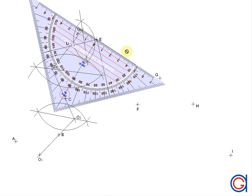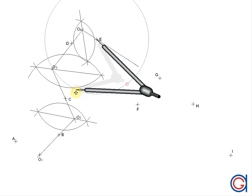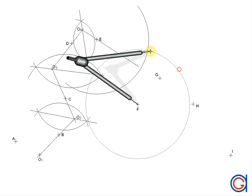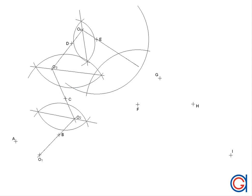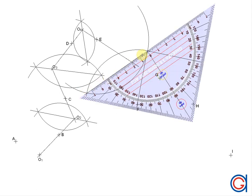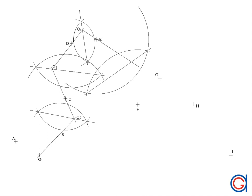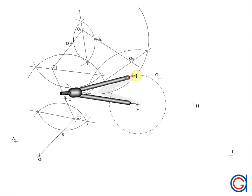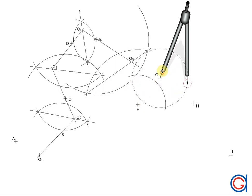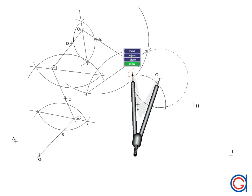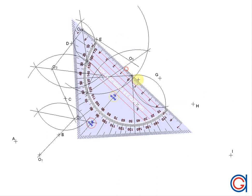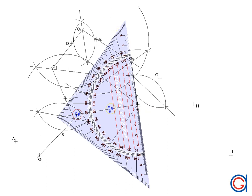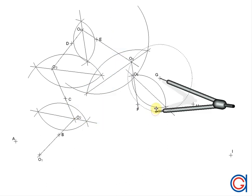We continue this process as the video speeds up to obtain our new centers O5 and O6. We have obtained O5. Now to obtain O6, we work out the perpendicular bisector of points F and G, then joining point O5 through point F we obtain O6.